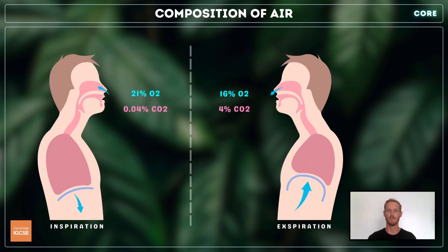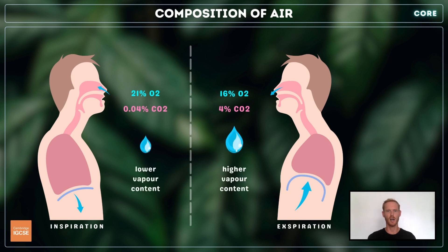Expired air contains more carbon dioxide and less oxygen than inspired air, because oxygen is used up and carbon dioxide is produced by respiration in the cells. In addition, expired air is saturated with water vapour, while the vapour content of inspired air varies depending on the levels of atmospheric humidity.